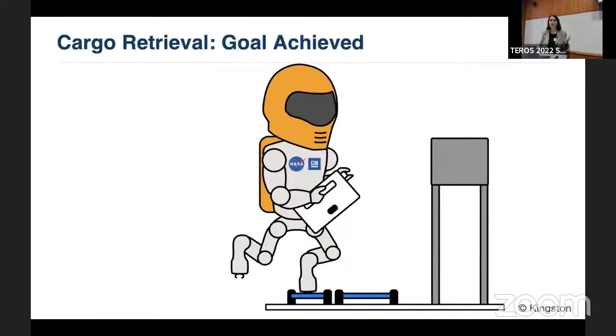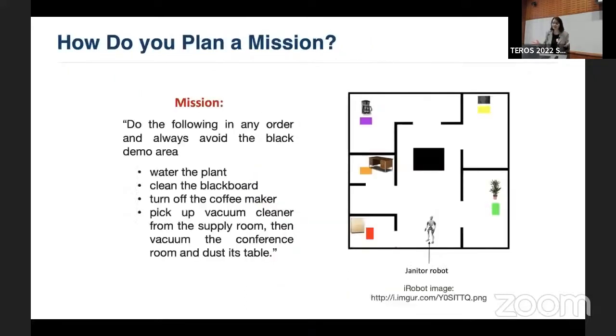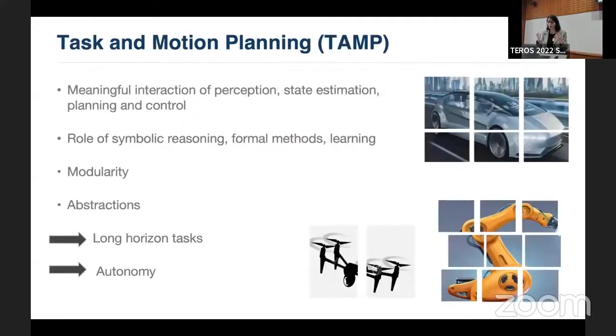And get close to the cargo bag and remove the restraint. And get the cargo bag and hold it tight because you don't want this cargo bag to fall out in space. And that will complete the task. But how do you get all this done? And here's another example. You have a janitor robot. You want this robot to do things in some order, avoiding the black area because the demo is happening there. You want it to water the plant, clean the blackboard, turn off the copy maker, pick up the vacuum cleaner. Your wish list here. And there may be temporal constraints. Do this and then do that.